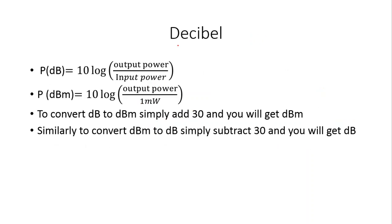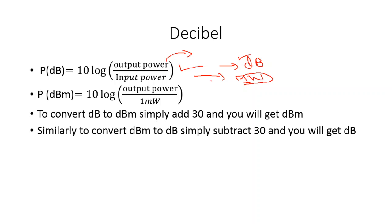The formula for decibels in terms of power is: dB = 10 × log(P_out / P_in). This is a ratio. If the input power is not given, you should take the input power as one. So the decibel is actually a ratio, and when input power is not specified, it defaults to one.